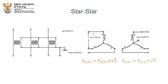That means we can connect three single-phase transformers or a three-phase transformer as star-star — connecting the primary side in a star configuration and the secondary side in a star configuration. Remember, the line voltage on the primary side equals the phase voltage on the primary side multiplied by the square root of three, and the same applies to the secondary side, because both are connected in a star formation.